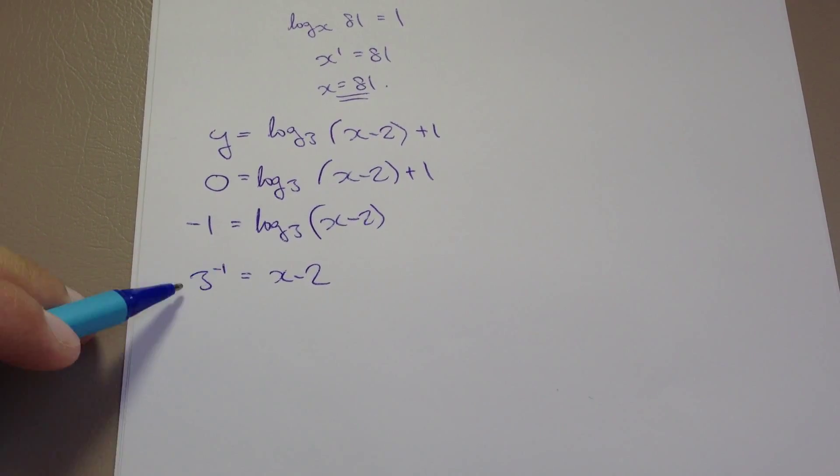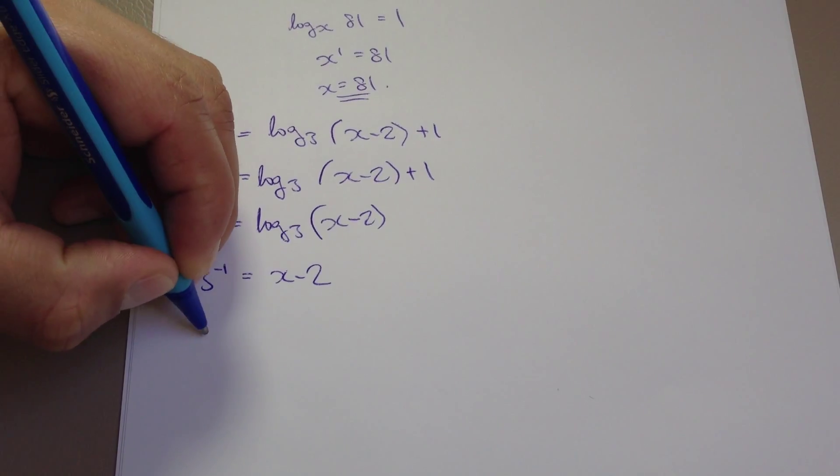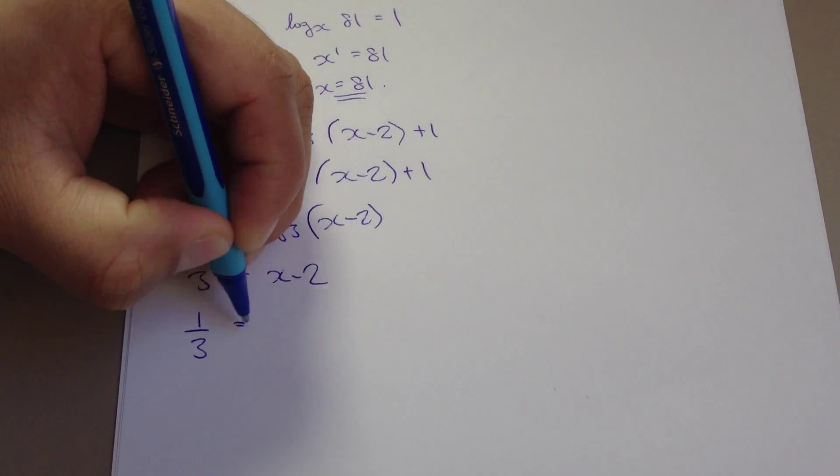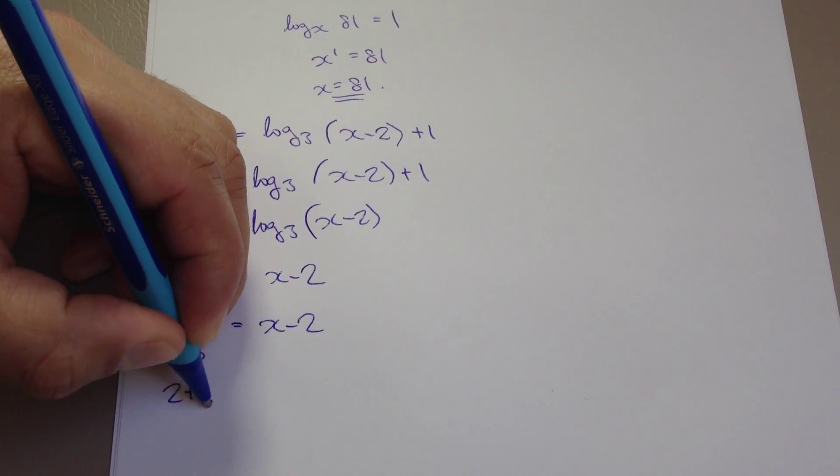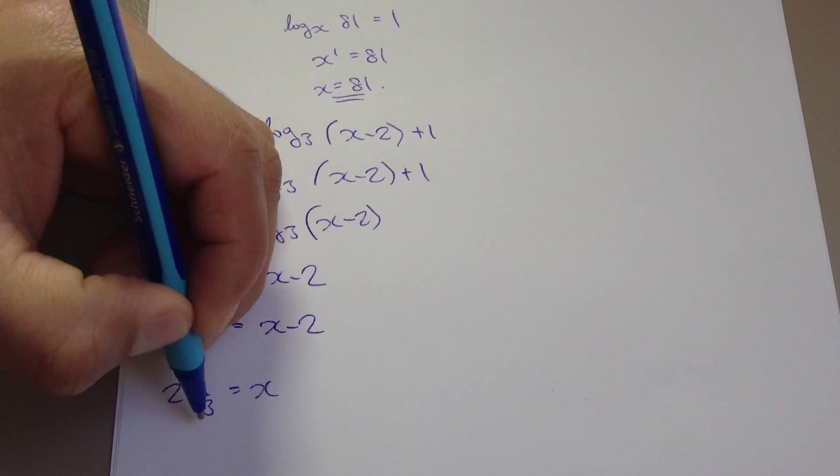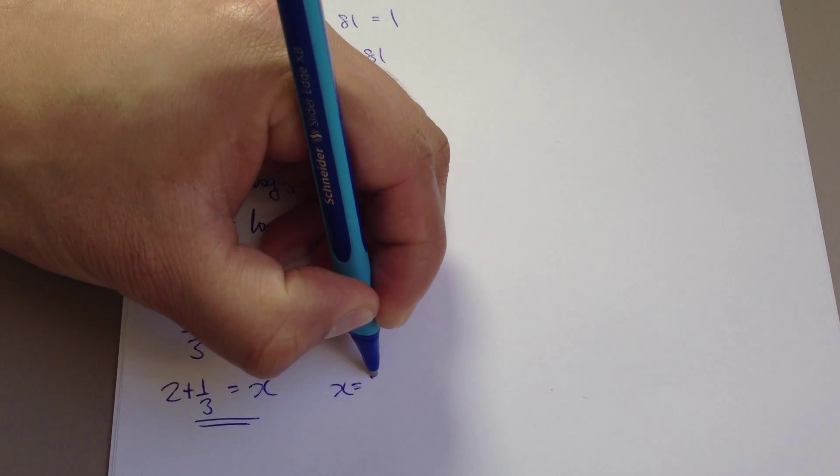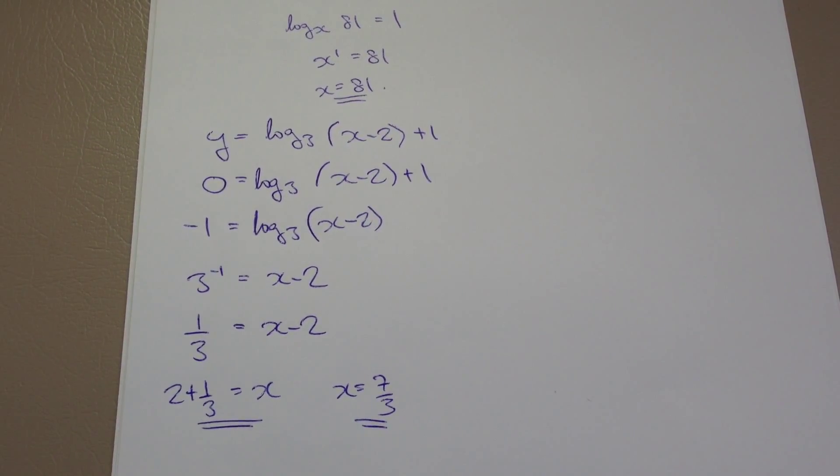From index rules, you know that 3 to the negative 1 is simply rewritten as 1 over 3 or a third, and that equals x take away 2. Take the negative 2 over and it becomes plus 2, so 2 plus a third equals x. If you want, you can rewrite it as 7 thirds. Either would be perfectly acceptable.